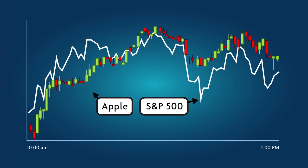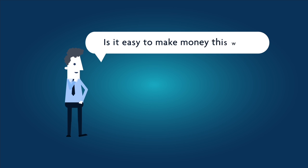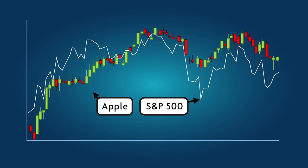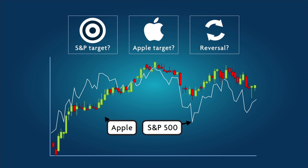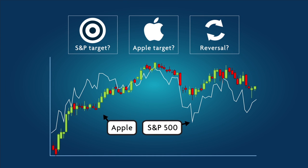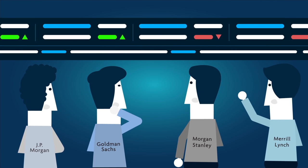The S&P moves first, and individual companies' shares follow. Is it easy to make money this way? The answer is no. Apple should move in the direction that the S&P is trending, but you can never know how much the S&P will move, how much later Apple will move in relation to the S&P, and when the S&P will reverse. Nonetheless, you can still take advantage of this information.